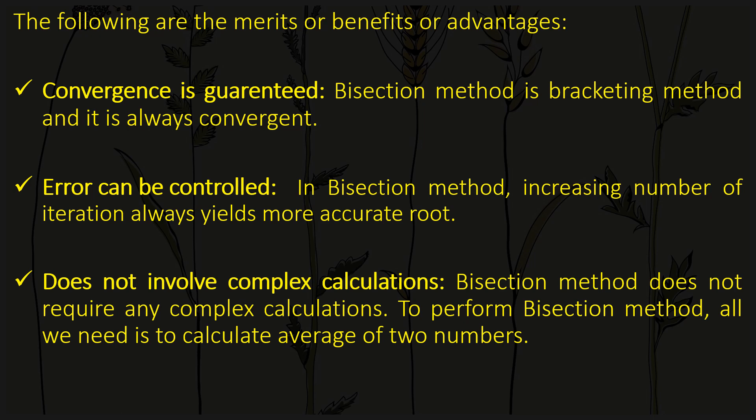What are the merits or advantages or benefits of a bisection method? The first one is convergence is guaranteed. The bisection method is a bracketing method and it is always convergent. That means whatever value we are going to get, we are going to find the root of an equation, and that root will be convergent — nearly towards the exact value of the root.